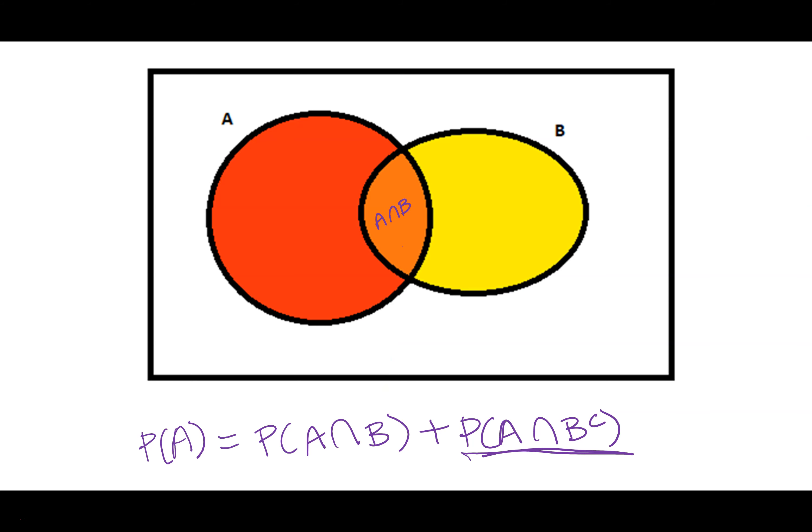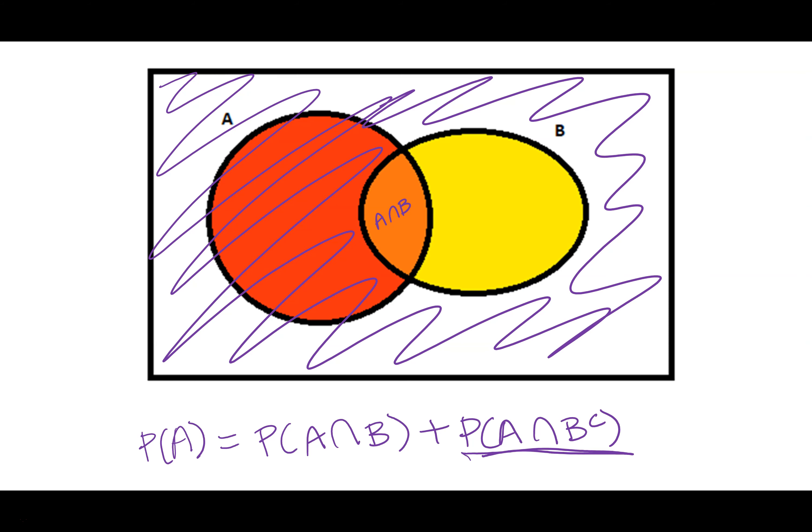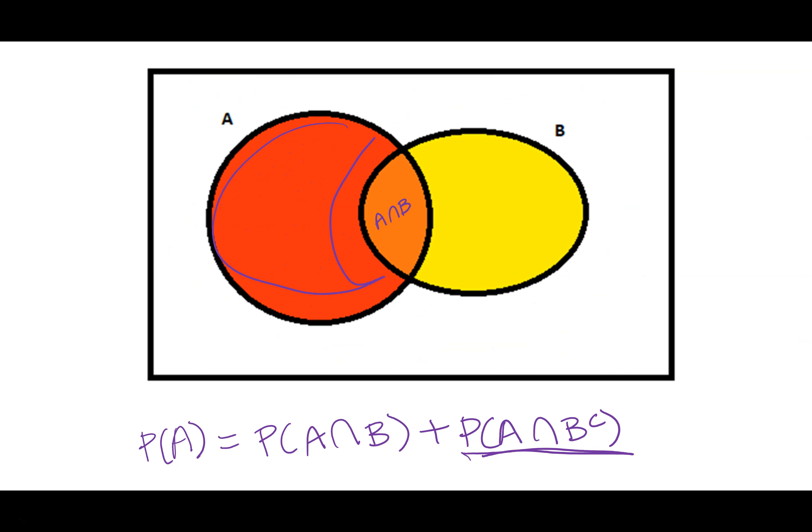The probability of A and not B. So remember, not B is everything that's not inside of B, so all of this. And we want to know where it overlaps with A, it's just going to be this wedge right here.